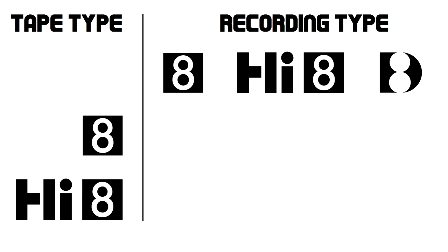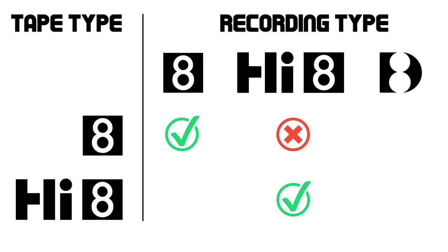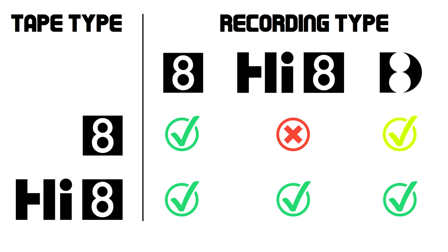You can use any tape in any machine. The only time it matters is when you want to record in Hi8 format, for which you need Hi8 tape. Standard 8 video can be recorded on any tape. For Digital 8 recordings, Hi8 tape is recommended, but standard 8 tape can be used as well, as the digital format proved more resilient to tape imperfections than analog.